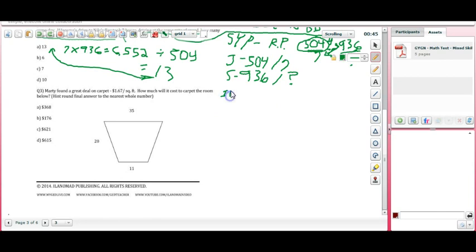Let's keep on chopping down to number three. Marty found a great deal on carpet, $1.67 per square foot. How much will it cost to carpet the room below? Hint: round final answer to the nearest whole number. We have this shape here. We might be thinking about formulas: rectangle is length times width, triangle is one half base times height, circle is pi r squared. But this shape might not be a formula many of us are familiar with.